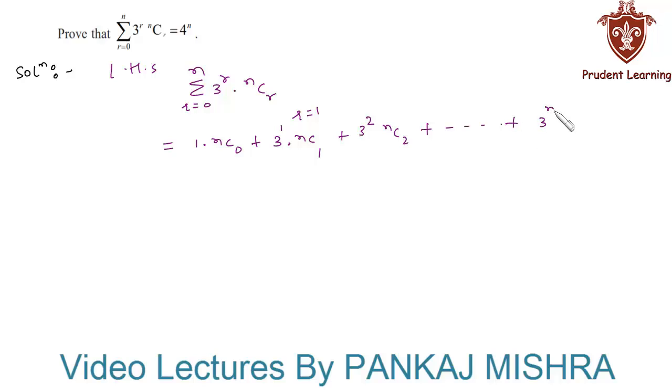Which gives us NC0 plus NC1, plus NC2 into 3², and so on up to NCN into 3^N.